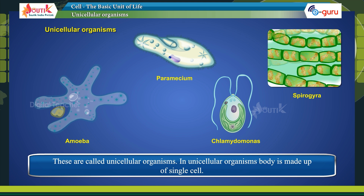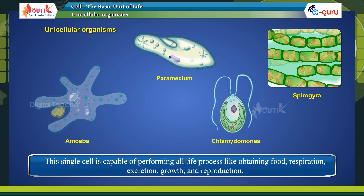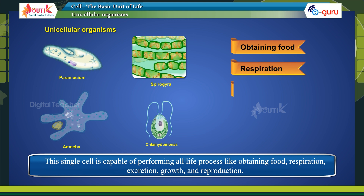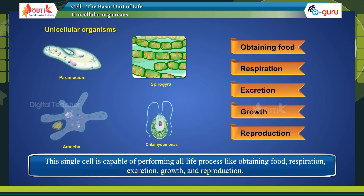In unicellular organisms, the body is made up of a single cell. This single cell is capable of performing all life processes like obtaining food, respiration, excretion, growth, and reproduction.